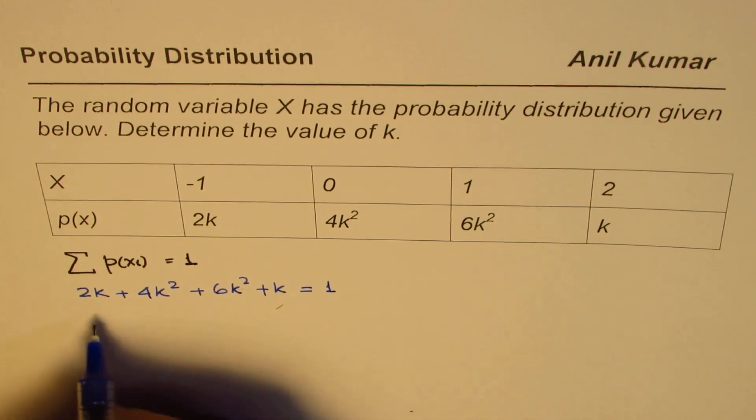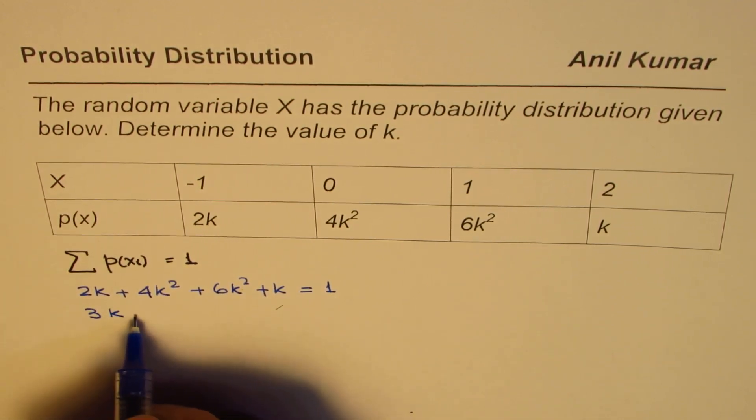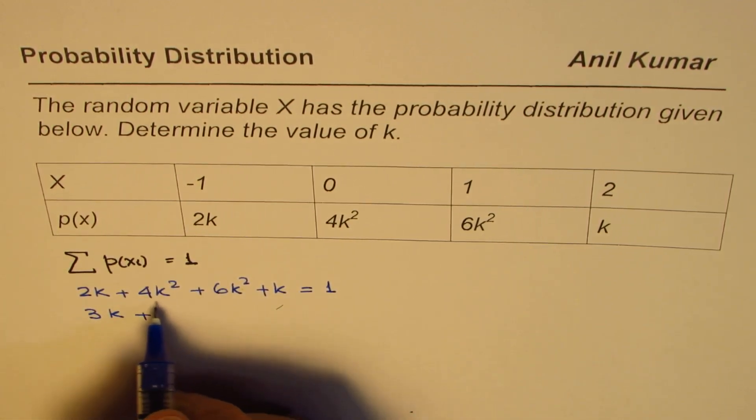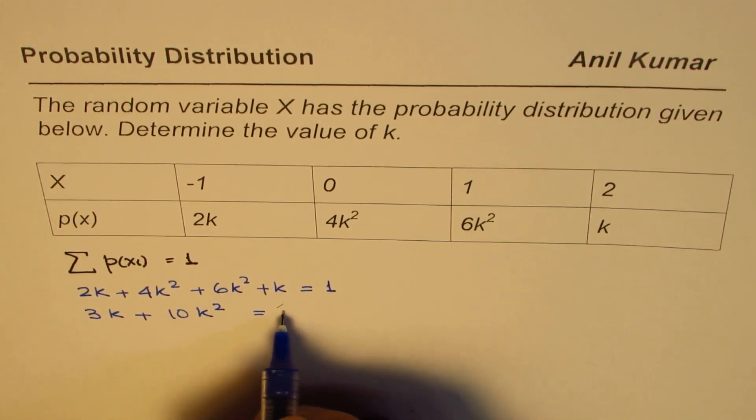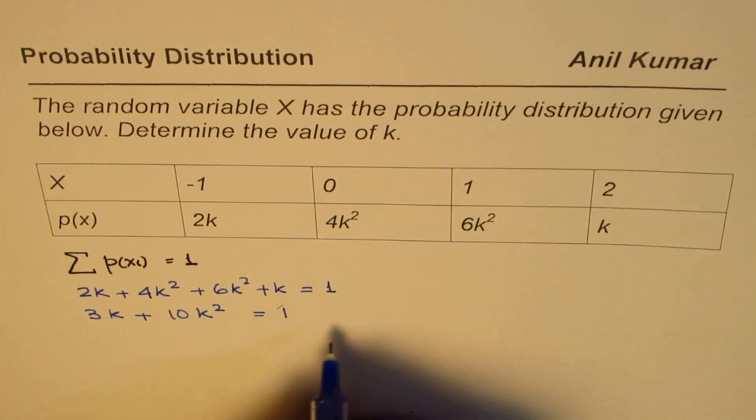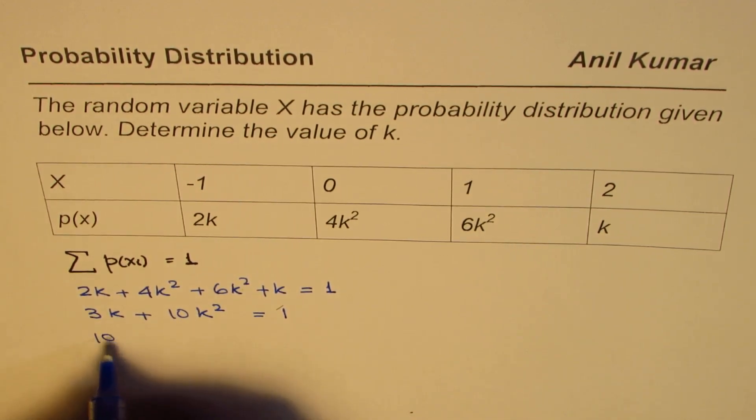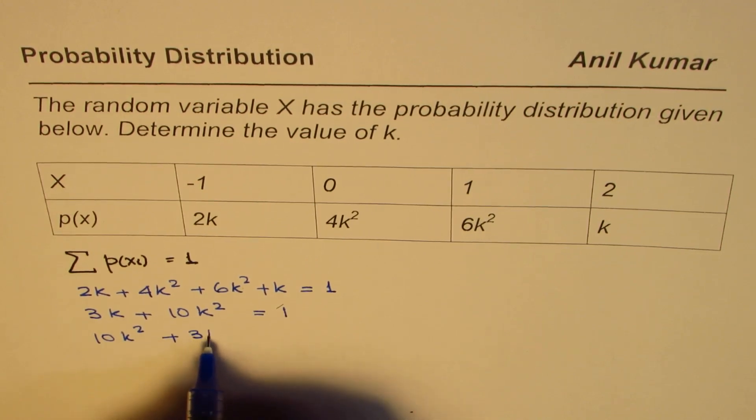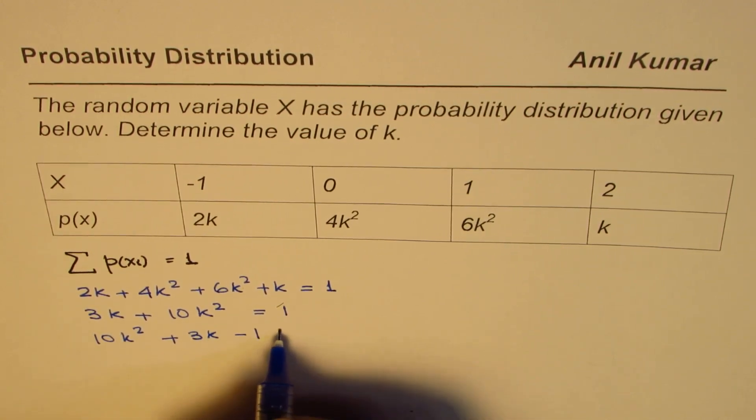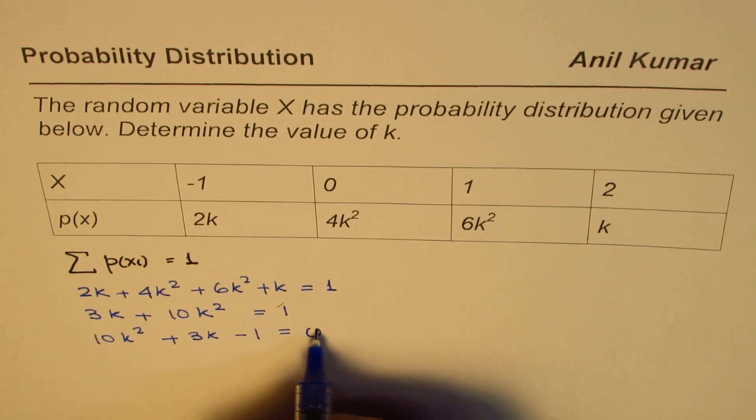Now we can solve it. 2k plus k is 3k, so we have 3k plus 6 and 4 is 10, 10k square equals to 1. Now rearranging, we get 10k square plus 3k minus 1 is equal to 0, which is a quadratic equation in k.